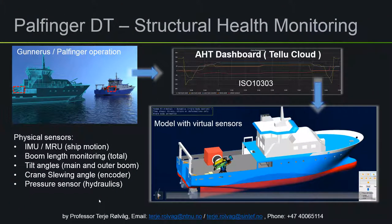The physical sensors used for structural health monitoring on the crane include: the ship IMU, which gives information about wave-induced motions that the ship imposes on the crane; a boom length monitoring sensor sensing the overall boom length, which must be recalculated to individual cylinder strokes; two tilt angle sensors, one on the main and one on the outer boom; an encoder on the crane slewing axis; and a pressure sensor on the hydraulic system to detect when the crane starts operating. These physical sensor data are transferred to the IoT dashboard via the gateway using the ISO STEP standard.